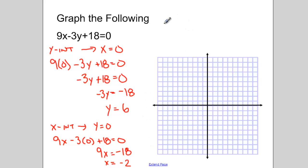So these are my two points that I have found: 0 and 6, and negative 2 and 0. Plot these two points on my grid. Connect them with my straight line.